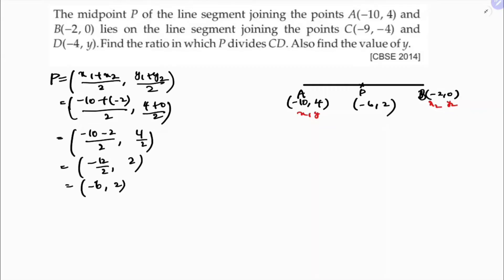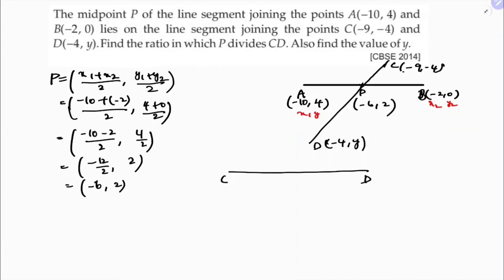Now this point P lies on the line segment joining points C and D. C is (-9, -4) and D is (-4, y). We need to find the ratio in which P divides CD. It will be better if you draw a diagram with C and D.